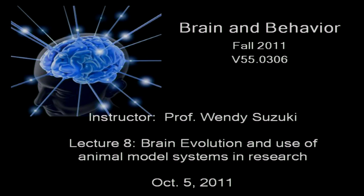Today's lecture is on brain evolution, but also on the use of animal model systems in research. We're switching gears from the more cellular aspects of action potentials and neuroanatomy, moving towards systems neuroscience: understanding the sensory systems, the motor systems, and the higher cognitive systems. We do a lot of work in animal model systems, so it's important you understand evolution and how animals' brains relate to each other, and also the rationale for why we use animals in experimental research today.